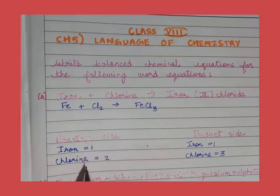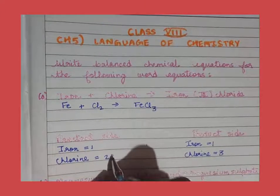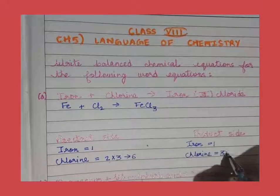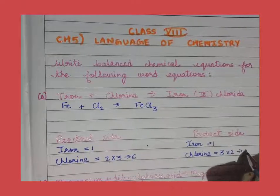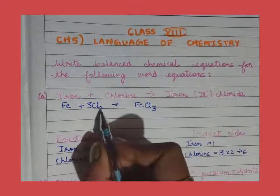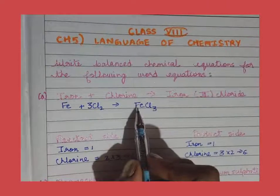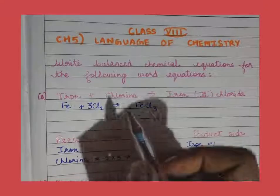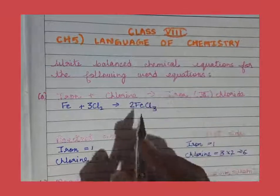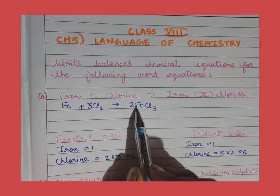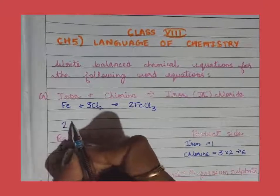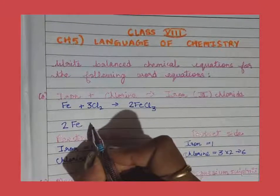So then for chlorine: on the reactant side it is 2, and on the product side it is 3. In order to equalize, we need to multiply by 3 on the Cl₂ side — 3 times 2 gives 6 — and multiply by 2 on the FeCl₃ side — 2 times 3 gives 6. So we multiply Cl₂ by 3, and since we multiply FeCl₃ by 2, iron also becomes 2. So we multiply Fe by 2 as well.